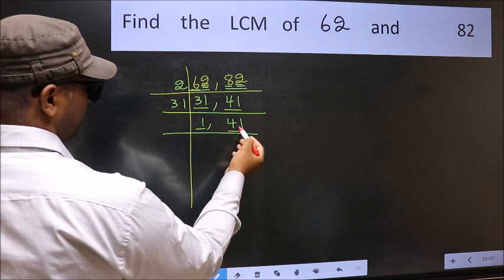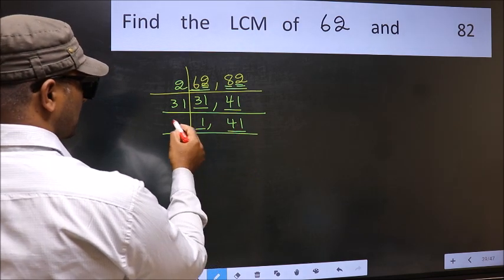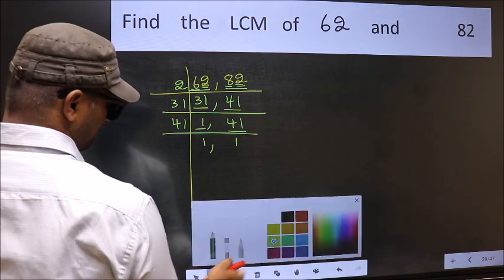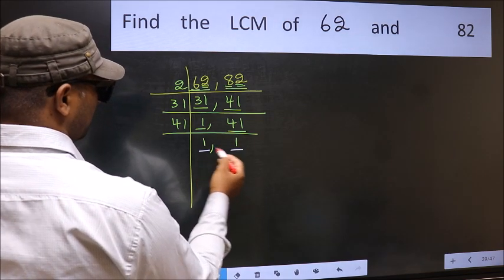So focus on the other number, 41. 41 is a prime number, so 41 goes into 41 once. So we got 1 in both places.